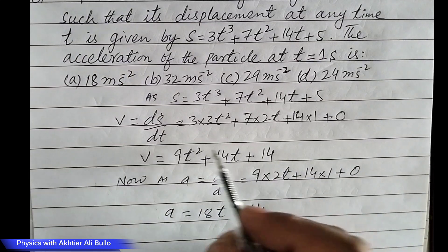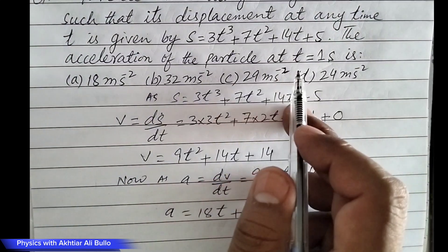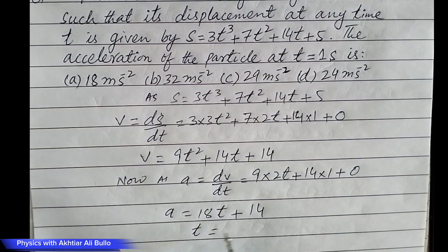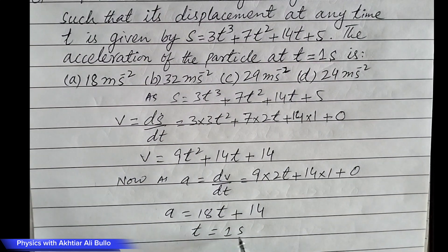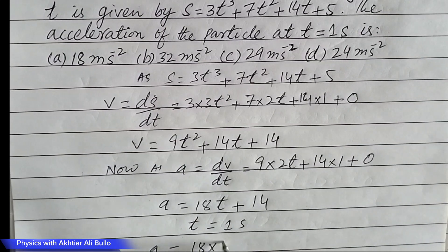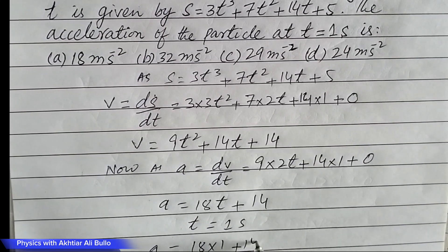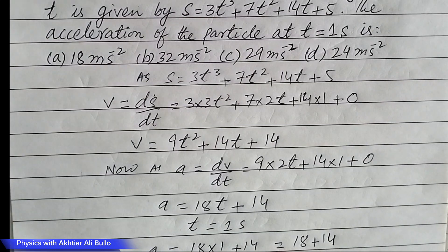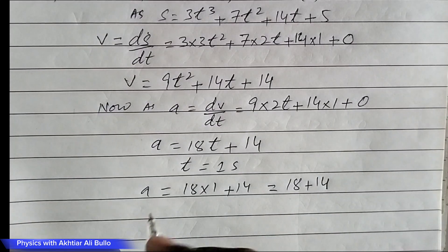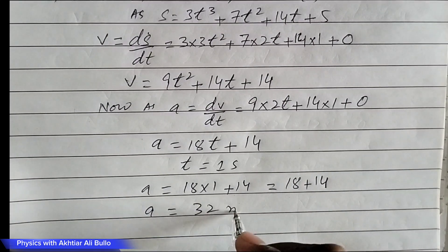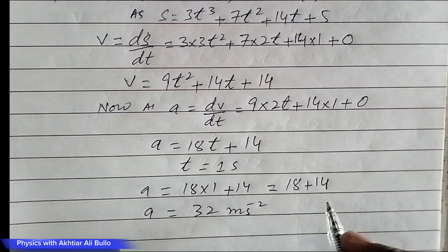As we have to find acceleration of the particle at t equals 1 second, by putting this value, acceleration will be equal to 18 into 1 plus 14. So it will be 18 plus 14. Acceleration will be obtained as 32 meter per second square.